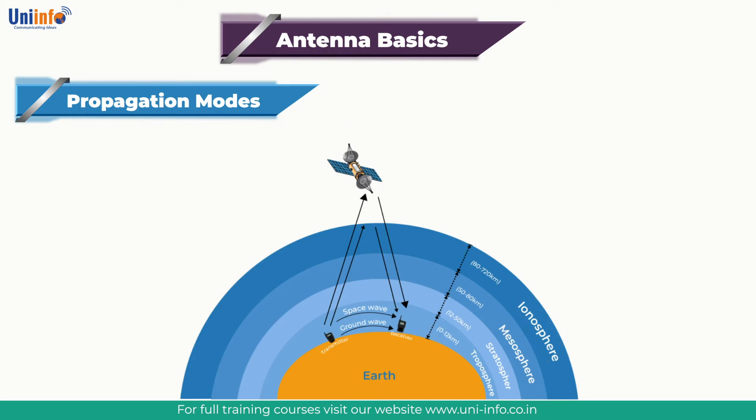Next is Tropospheric Propagation. Here, the signals are influenced by the variation of refractive index in the troposphere just above the Earth's surface. Tropospheric radio propagation is often the means by which signals at VHF and above are heard over extended distances.